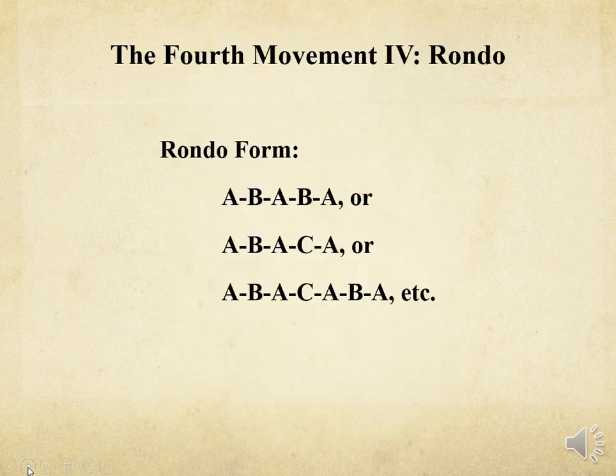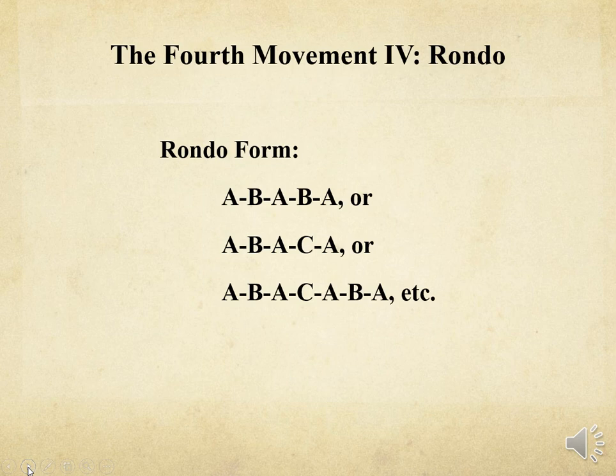The fourth movement of a multi-movement cycle is the rondo. The rondo form can be ABABA, or ABACA with new material in the C section, or ABACABA, and each of those sections or parts are repeated.